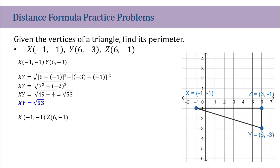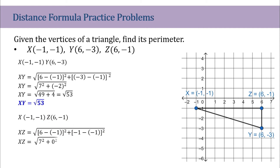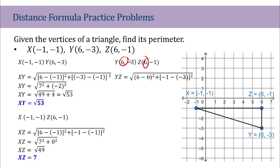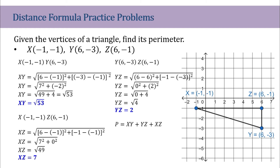For XZ, the horizontal distance — we could just count it: 7 units. Using the distance formula: negative 1 minus negative 1 becomes 0, giving us square root of 7 squared, which is 7. For YZ, the vertical distance — we could count it as 2 units. Using the distance formula: 6 minus 6 is 0, and negative 1 minus negative 3 gives positive 2 squared. Square root of 4 is 2. Now adding all sides for the perimeter: square root of 53 plus 7 plus 2 gives us 9 plus square root of 53.